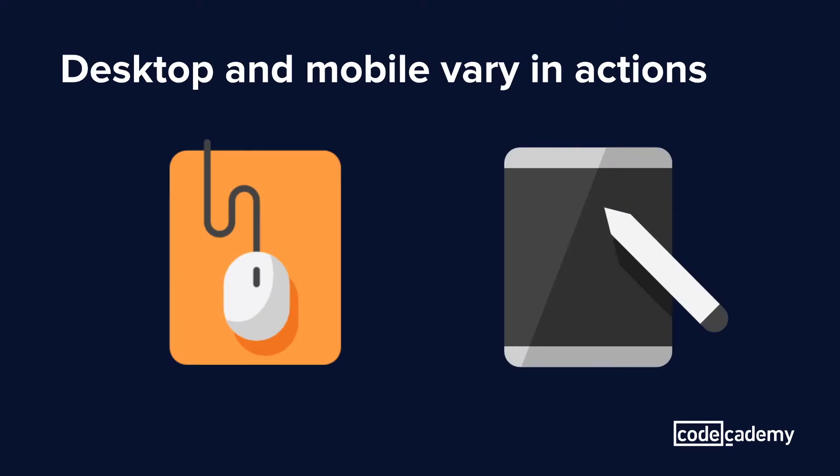There's also a fundamental difference between a desktop and mobile device, and that's how the user interacts with the device. On desktop, a user will often use a mouse, and on a mobile device, it's a user's finger.